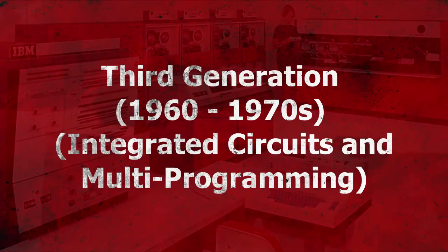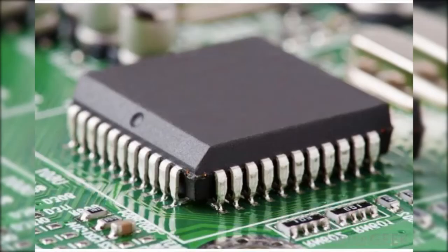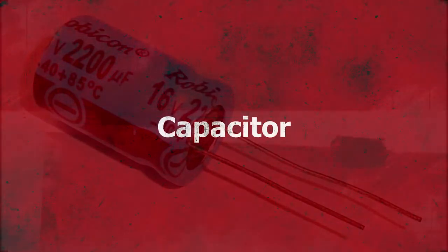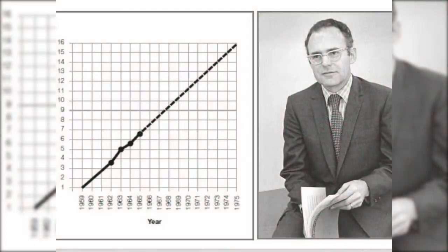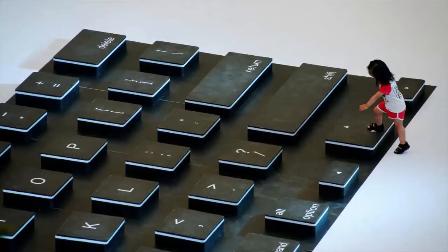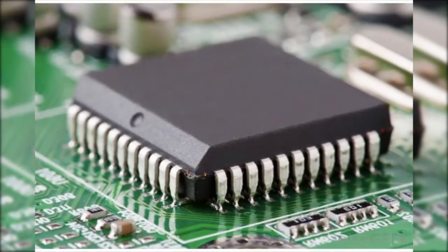Third generation of computers, 1960 to 1970, integrated circuits and multiprogramming. Third generation computers used the integrated circuit (IC) microchip instead of transistors. The semiconductor IC packed a huge number of transistors, capacitors, diodes, and rectifiers onto a single germanium or silicon chip, printed on separate parts of a printed circuit board. This was in line with Moore's Law of 1965, which observed that transistor size was shrinking so fast that double the number would fit into new microchips every two years. Moore later readjusted this to every five years in 1975.